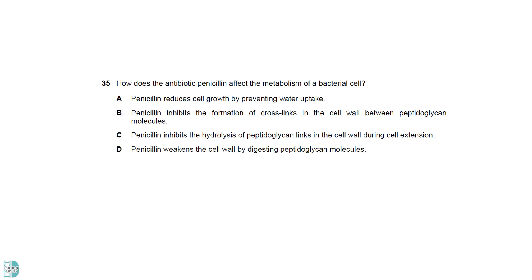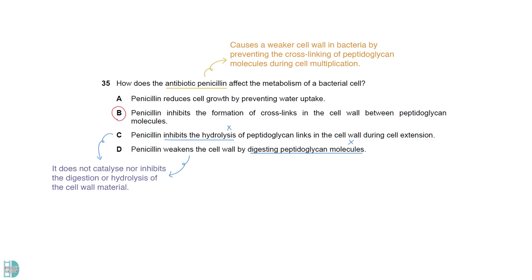Penicillin causes a weaker cell wall in bacteria by preventing the cross-linking of peptidoglycan molecules during cell multiplication. B correctly described this. It does not catalyze nor inhibit the digestion or hydrolysis of the cell wall material. A is also incorrect because it does not affect osmosis.